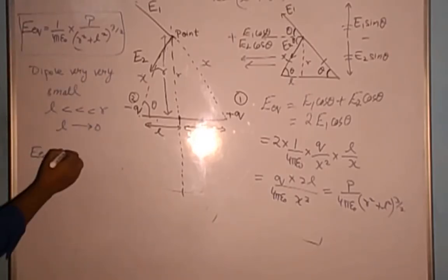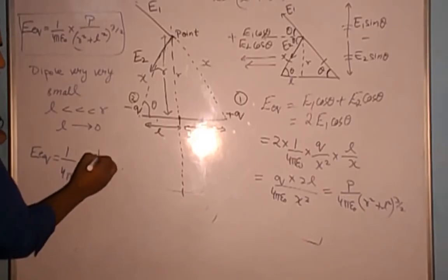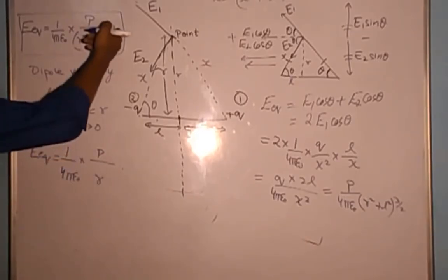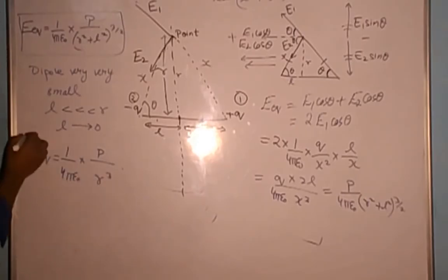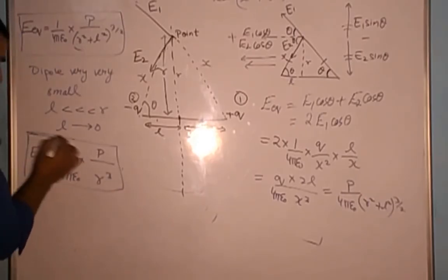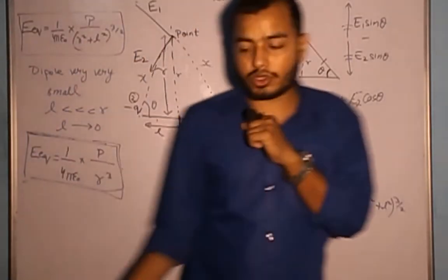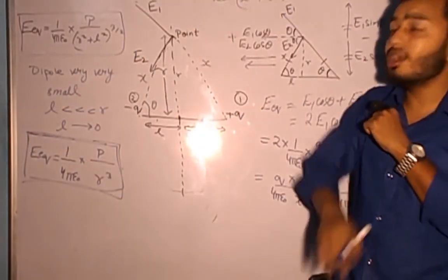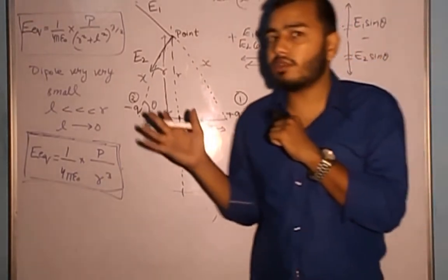When L << R (point is far from the dipole or dipole is very small), L can be neglected, and the formula simplifies to: E = (1/4πε₀) × p / R³. This is the electric field at the equatorial position for a short dipole.